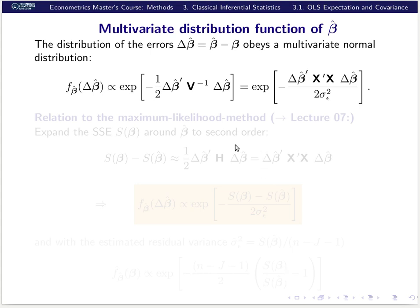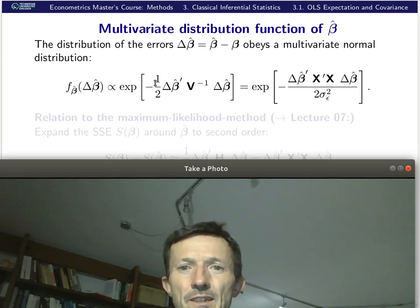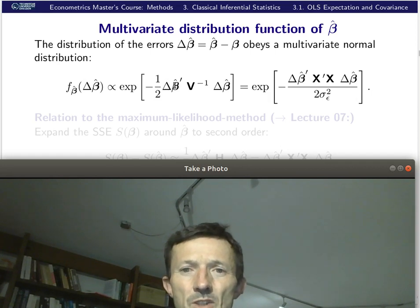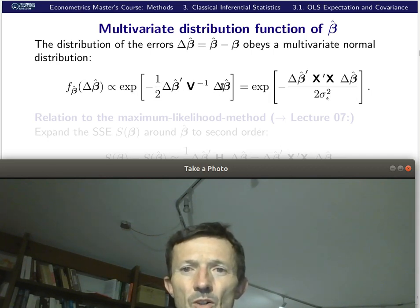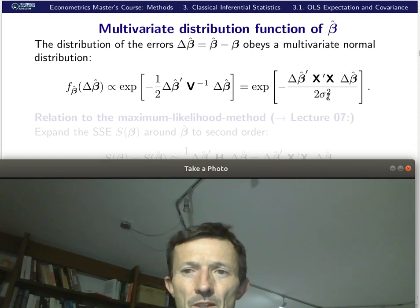So we know that if the expectation and variance-covariance matrix are known, and if the random variable is Gaussian distributed, then the distribution function is known — and as said, it's a multivariate Gaussian distribution. Generally, a multivariate Gaussian distribution is defined with the transposed error vector times the inverse of the variance-covariance matrix times the error vector. Because we know the variance-covariance matrix is sigma² times (X'X)^{-1}, the inverse is proportional to X'X itself, with the two sigma_epsilon in the denominator. That of course is a Gaussian with correlations.